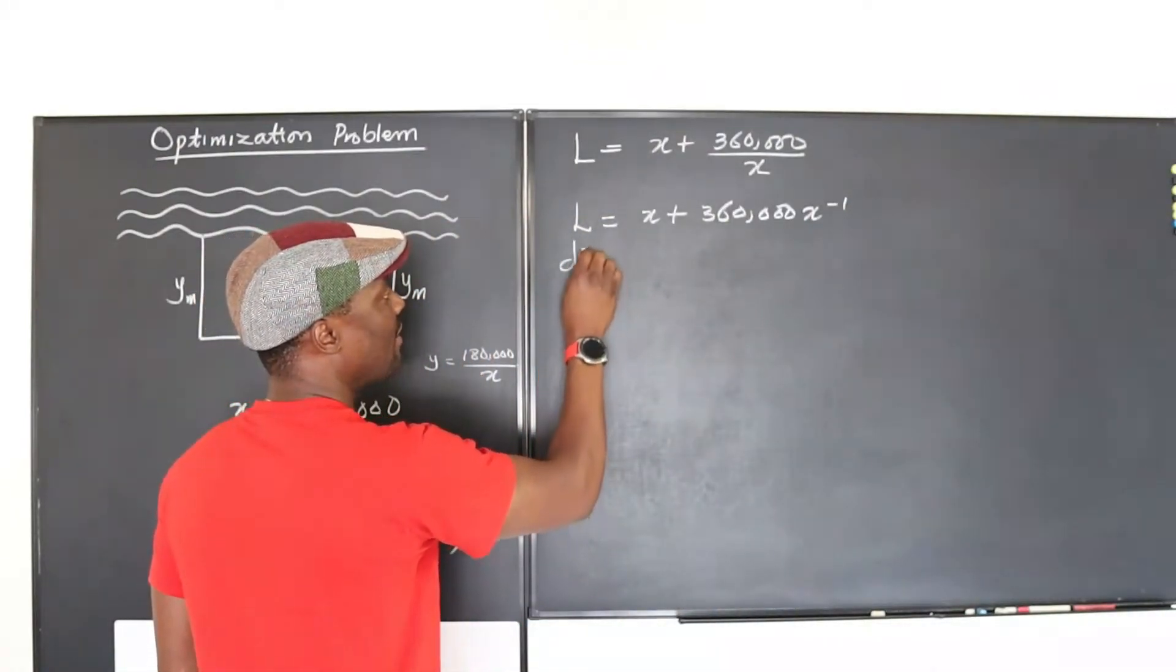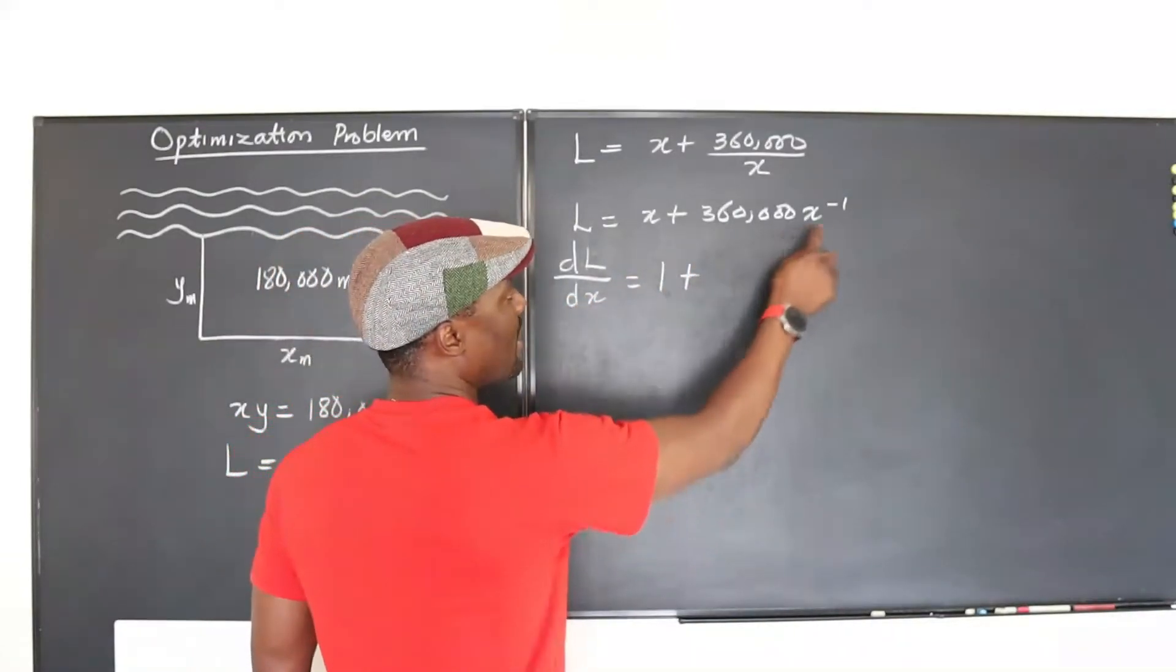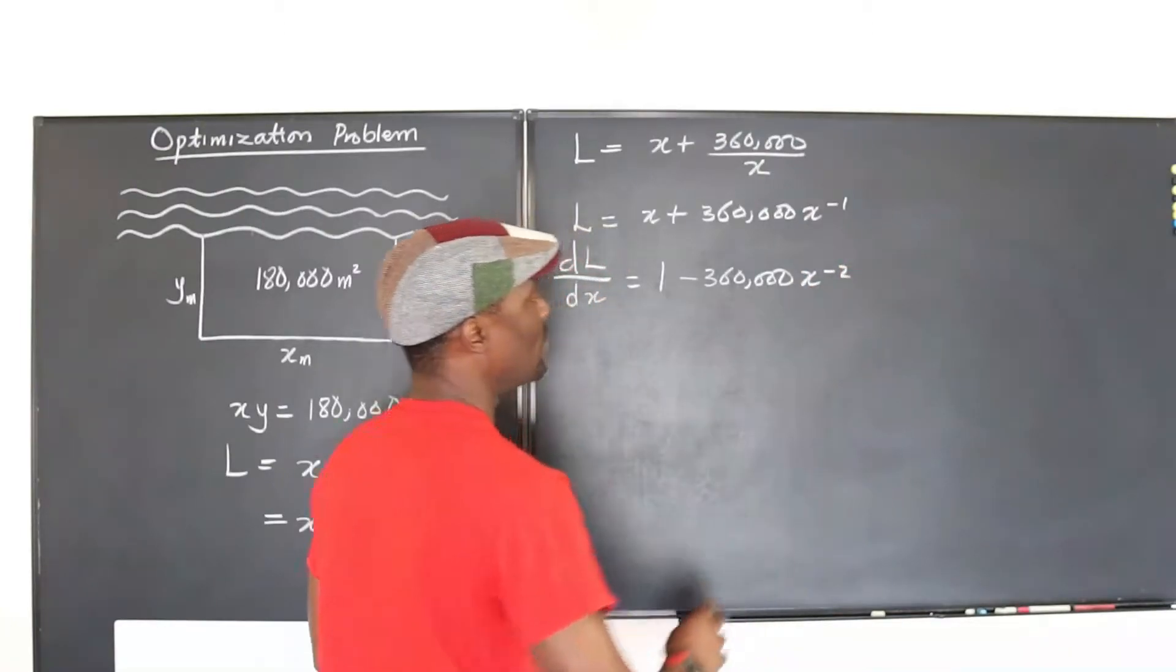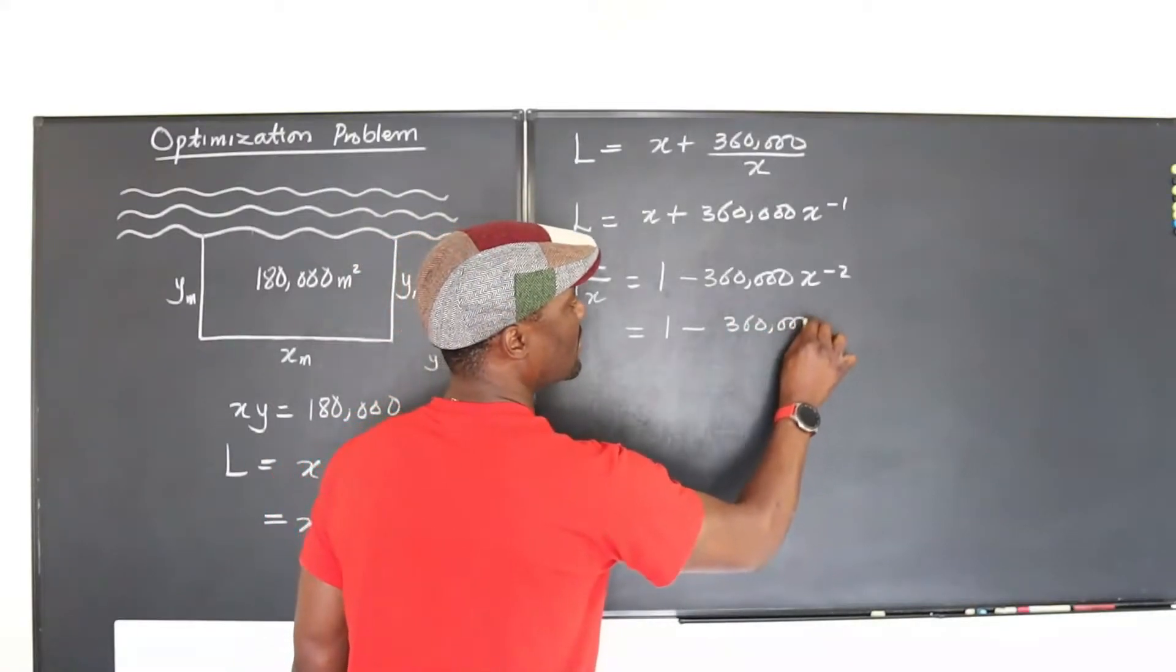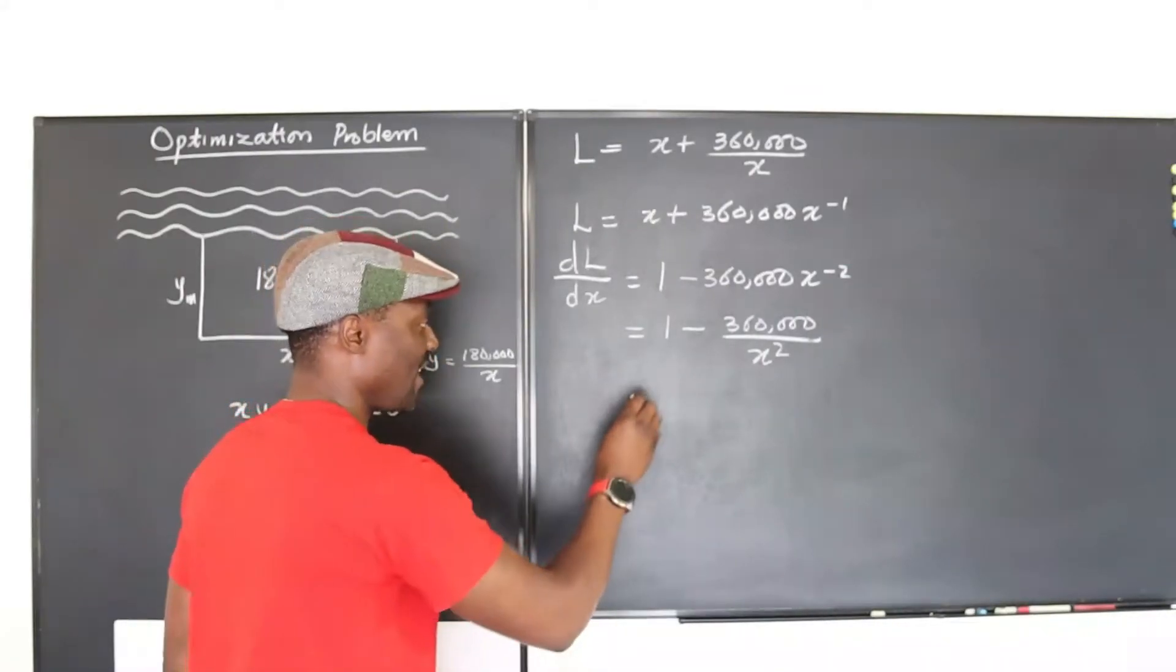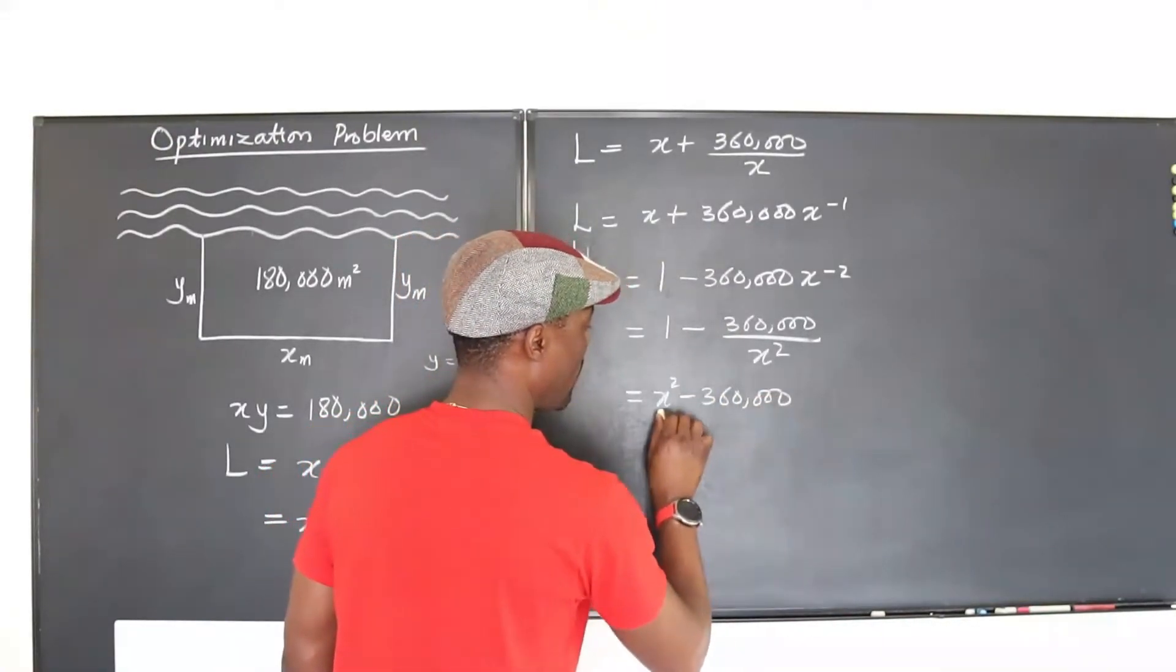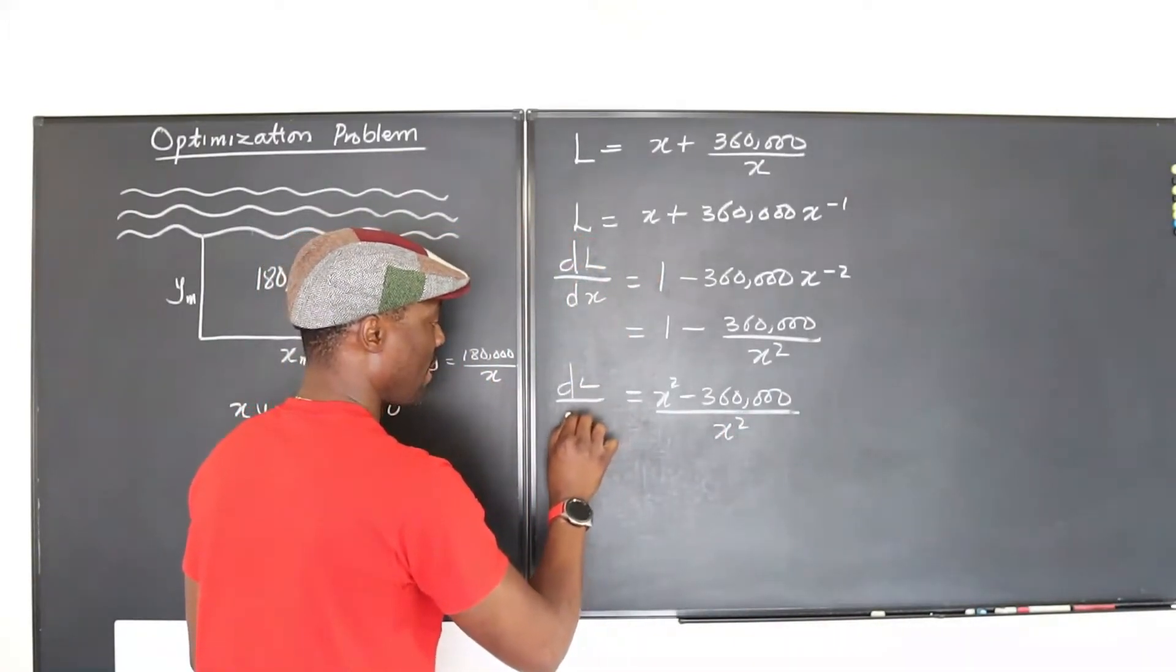Now let's differentiate. dL/dx will be equal to one plus—well, this is going to be minus one—minus 360,000x to the negative two. Well, we can rewrite this expression to be one minus 360,000 over x squared. Let's put everything together. We'll end up with x squared minus 360,000 over x squared. That's dL/dx.